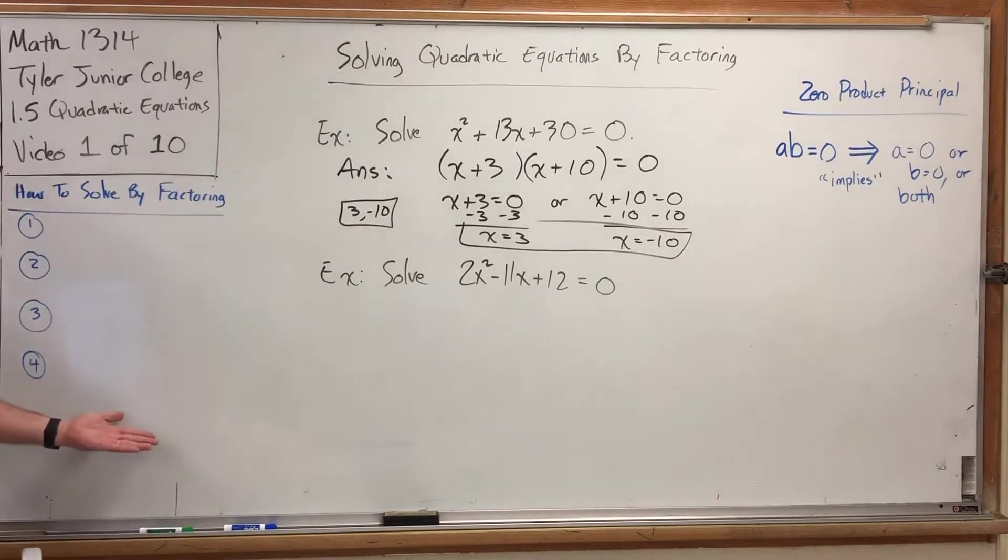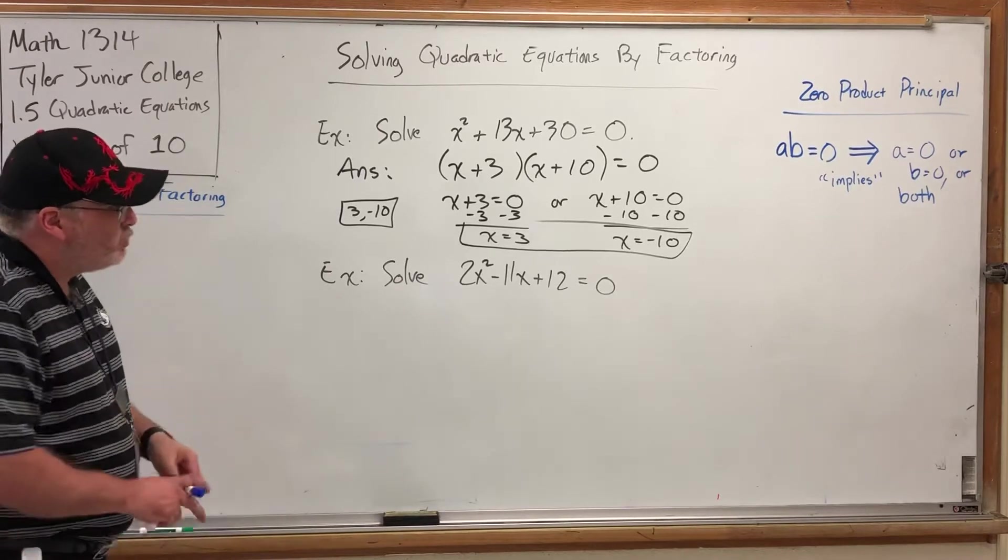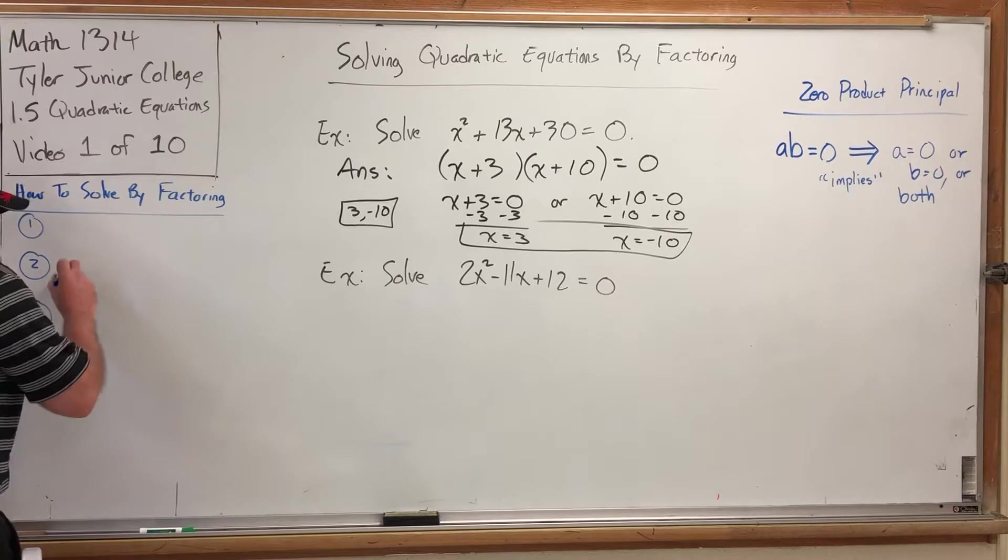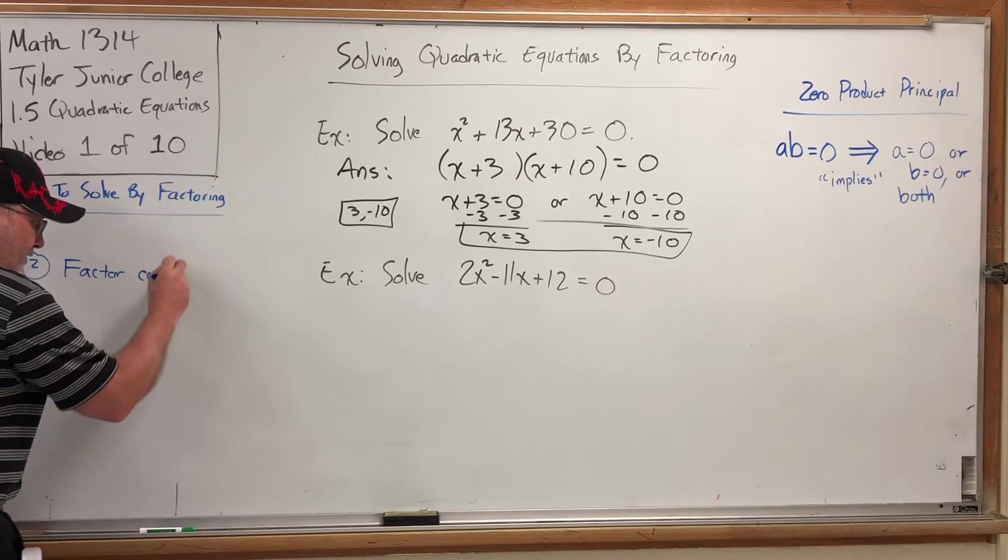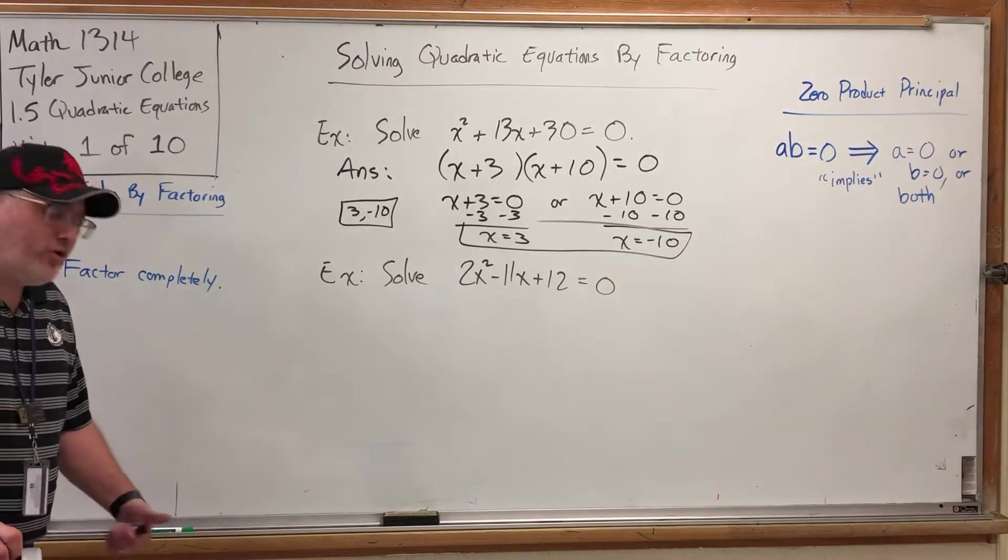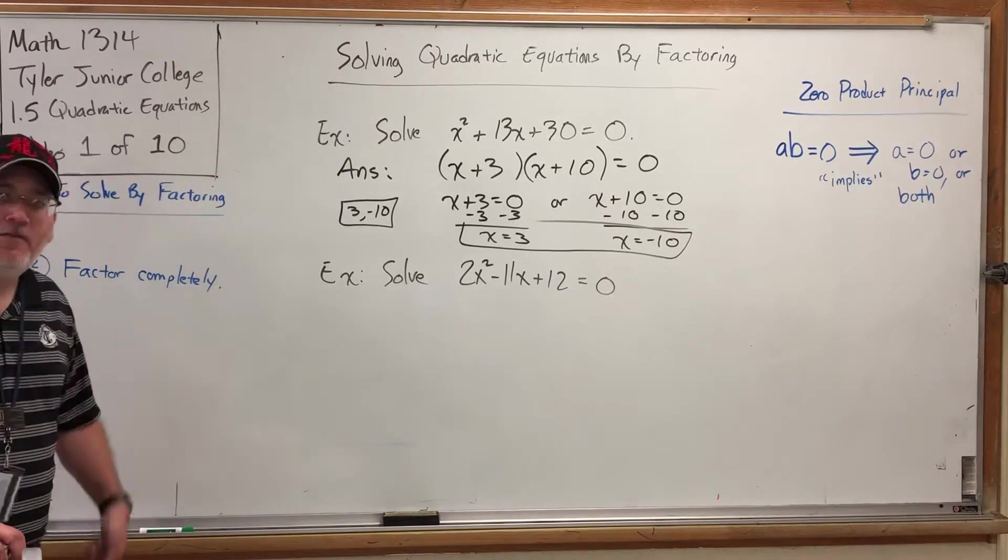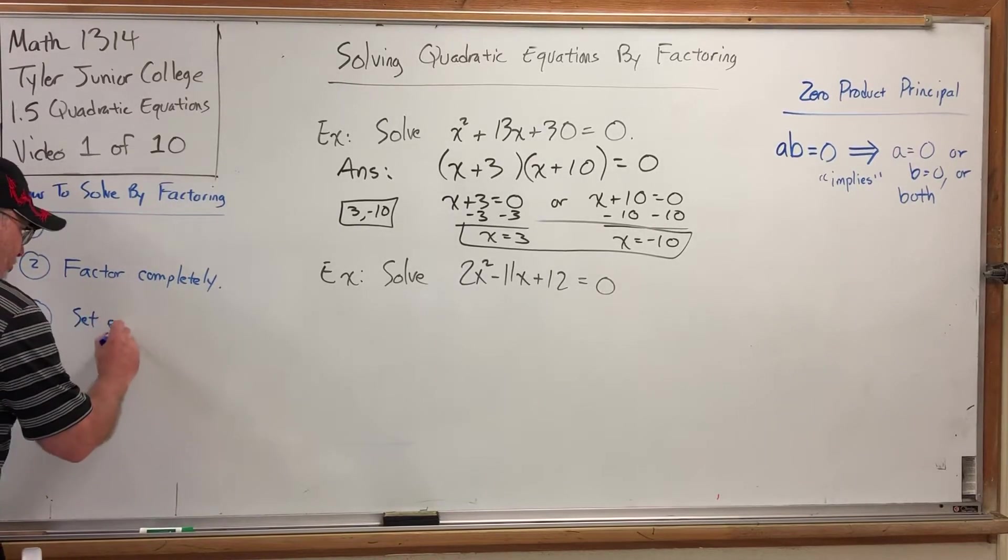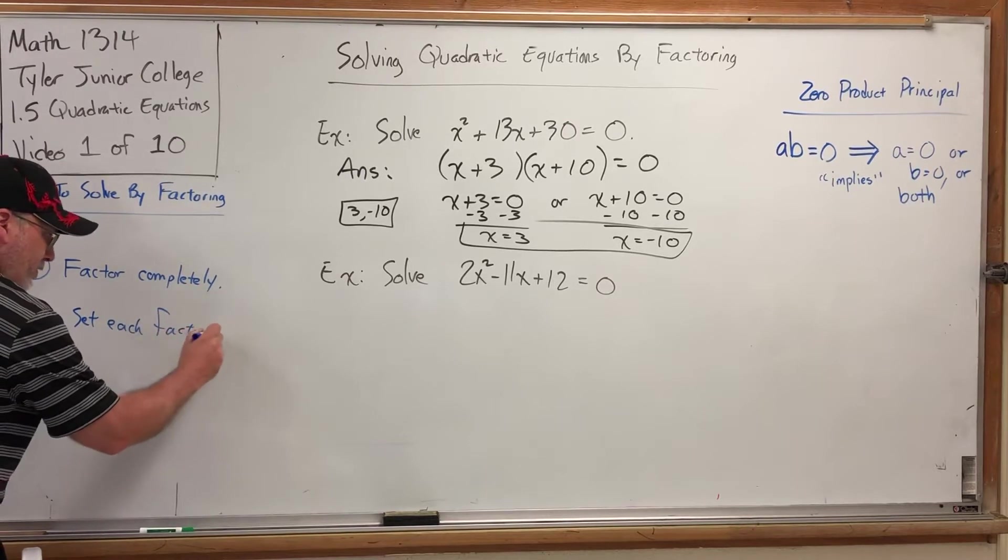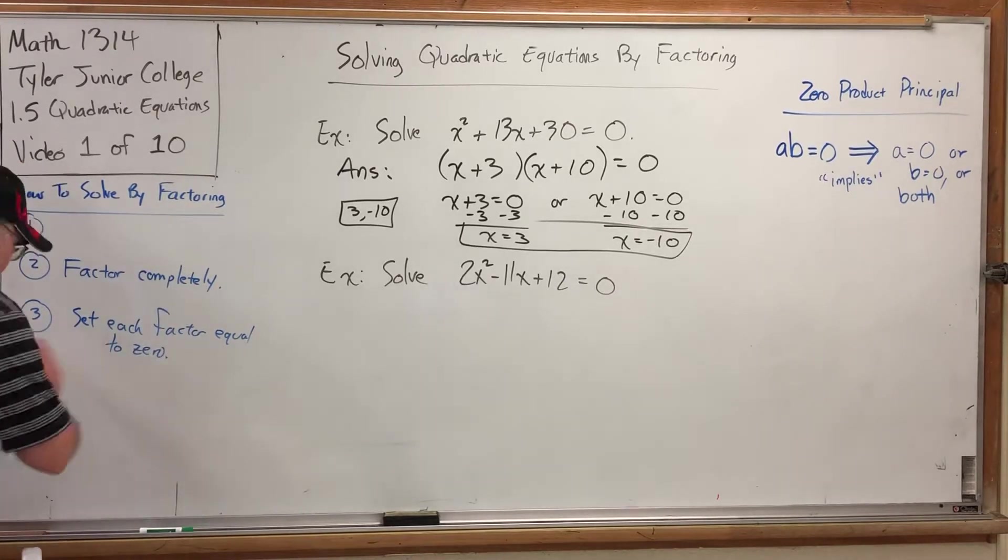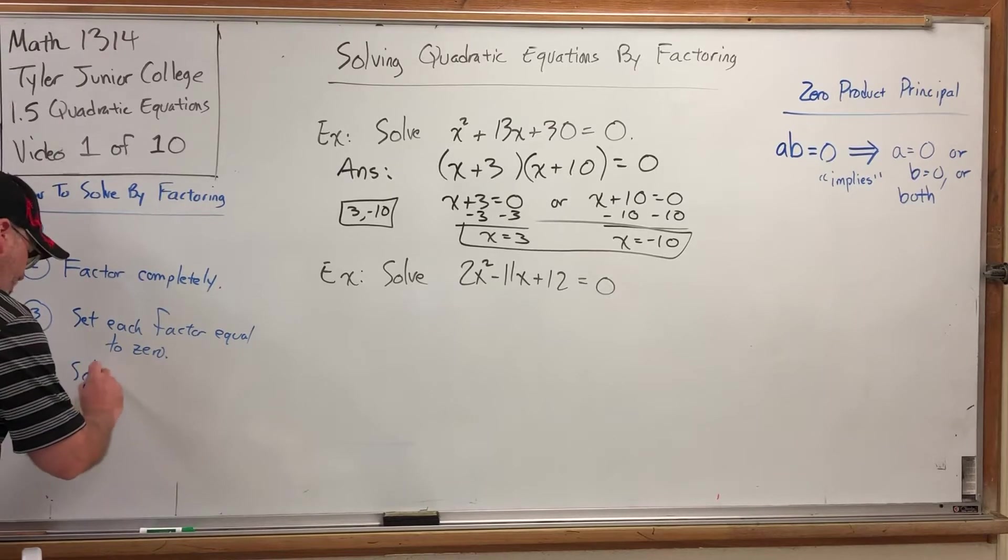As we do these problems, I want to build a list titled How to Solve by Factoring. And in fact, with this one example, we can kind of already start filling in some of these steps. I'm going to leave the first step blank because we haven't illustrated it yet. But the second step is to factor completely. Right now, factoring completely basically means factor once. But as we progress through this course, factor completely will involve multiple consecutive factoring moves. But once we factor it, your third step is to set each factor equal to zero, which is what the zero product principle says we can do. And then fourth and finally, solve each smaller equation.